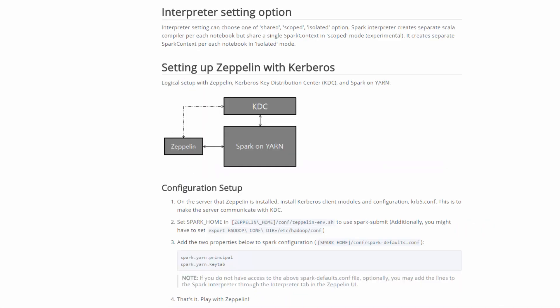For the interpreter setting option, you can choose one of the following: shared, scoped, or isolated. In scoped mode, the Spark interpreter creates a separate Scala compiler per each notebook but shares a single Spark context. In isolated mode, it creates a separate Spark context per each notebook. This shows the logical setup with Zeppelin.